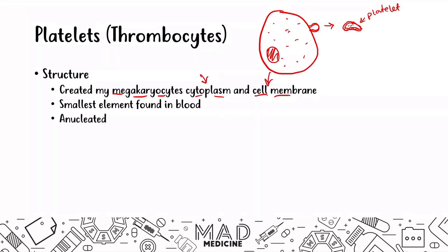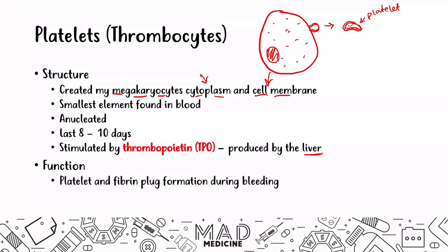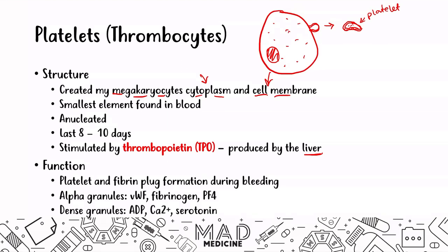The platelet is the smallest element found in the blood. It is anucleated and lasts 8 to 10 days on average. Platelets can be stimulated to be released by thrombopoietin, TPO, which is produced by the liver. The function of platelets is to form the platelet and fibrin plug during bleeding, reducing damage and preventing further blood loss. Within platelets, you have alpha granules and dense granules. Alpha granules contain VWF (von Willebrand factor), fibrinogen, and platelet factor 4. Dense granules contain ADP, calcium, and serotonin. It's very high yield to know what is in both types of granules.